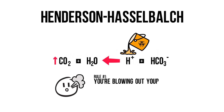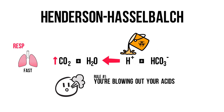You're blowing out your acids. Hyperventilation brings down CO2, and which necessarily follows that hydrogen is lowered and pH goes up. So the left side of this equation is the respiratory part. It is a fast responding system for the compensation of the acid-base disturbance. If the primary problem resides on the left side of the equation, we call that problem a respiratory alkalosis or acidosis.